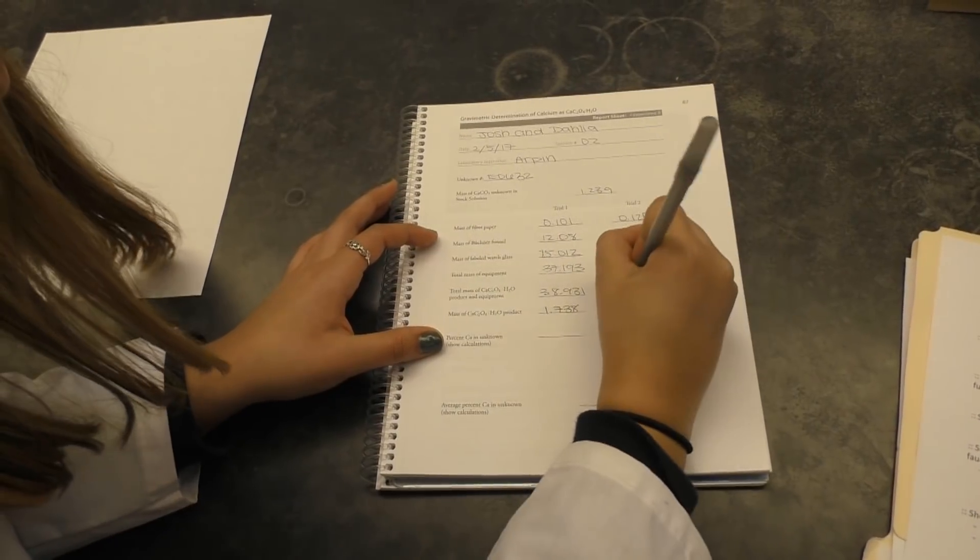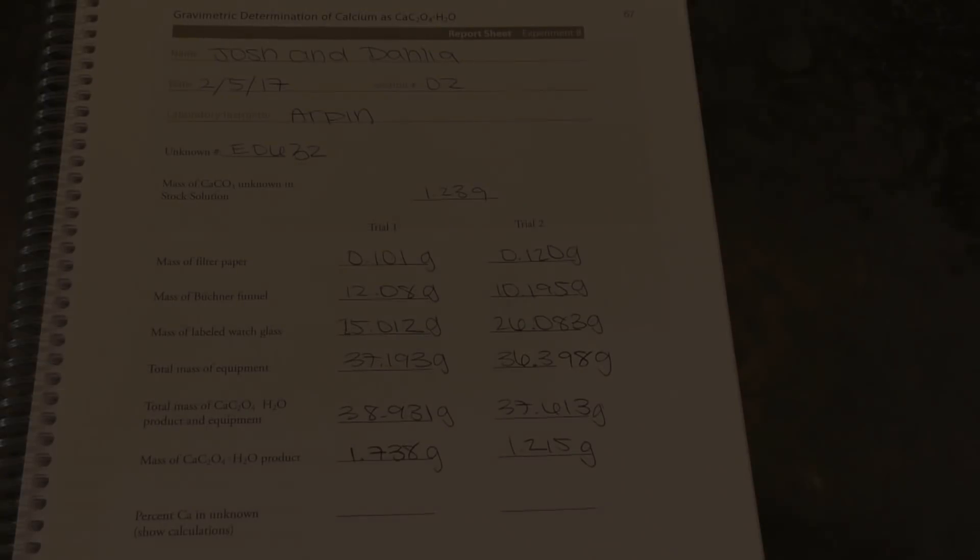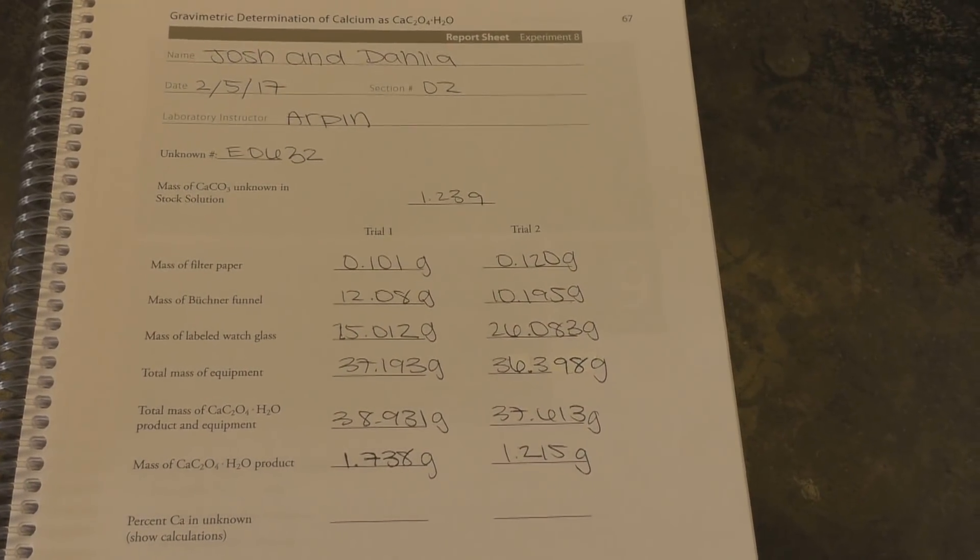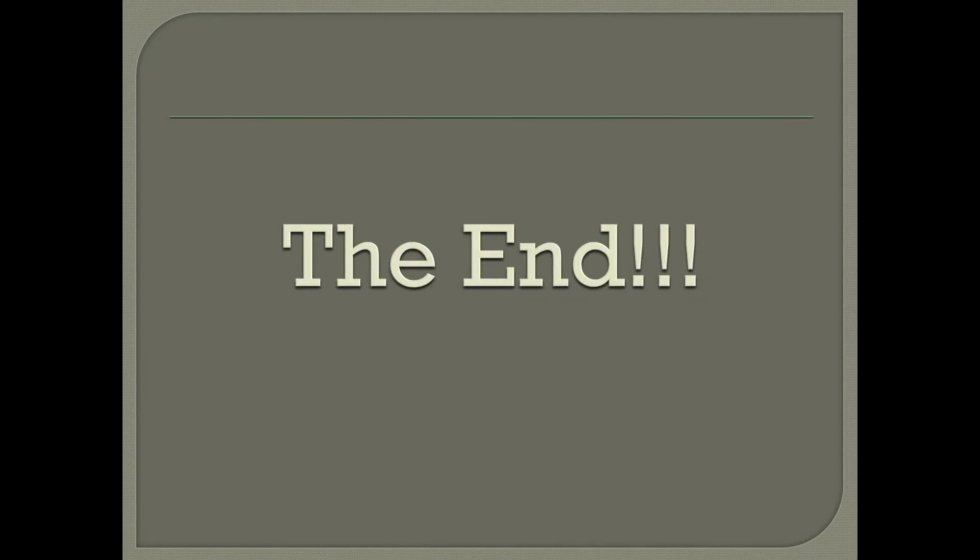Since you obtained a mass of your equipment both before and after filtering, you can now determine the mass of your precipitated product. And from that mass you can then figure out how much calcium was in your original unknown. Gravimetric analysis is the coolest.